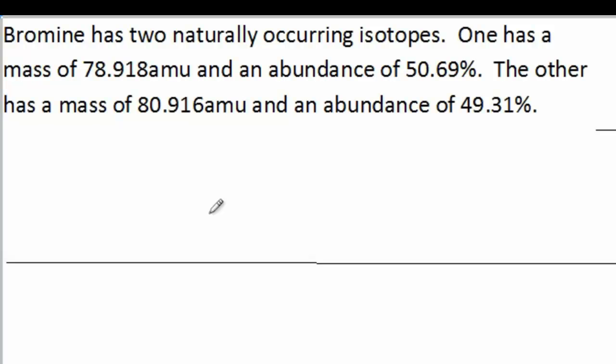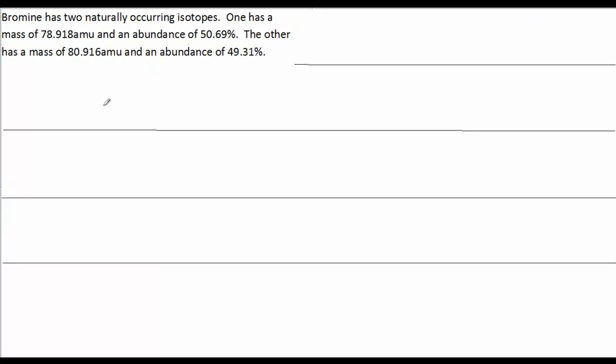One has a mass of 78.918 AMUs or atomic mass units, and it has an abundance of 50.69%. The other isotope has a mass of 80.916 AMUs and an abundance of 49.31%.